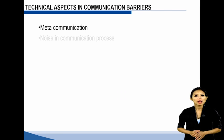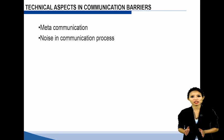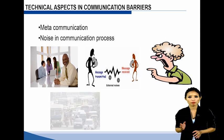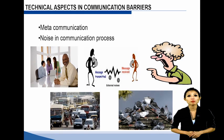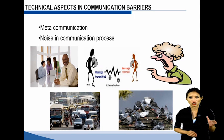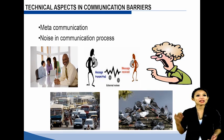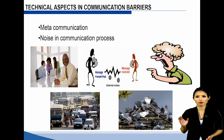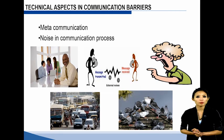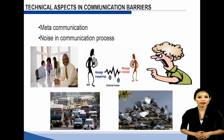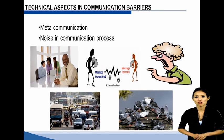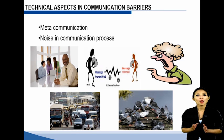Meta-communication: In communication, apart from the message there is a meta-message. Meta-messages exist in people's minds because of their actions, such as being hard to contact. Noise in the communication process can enter due to situational factors and is mostly related to mechanical distraction. A few examples of noise distraction are human sounds, traffic, bird chirping, etc.